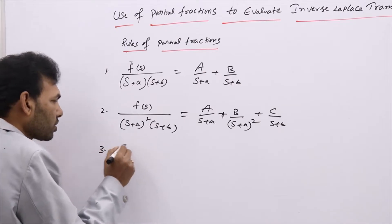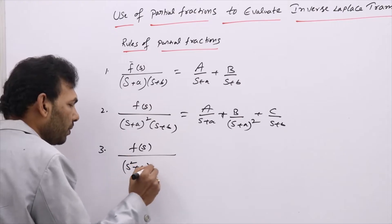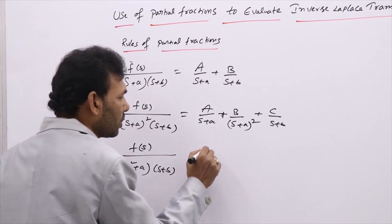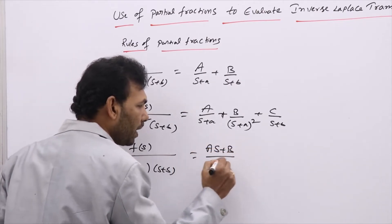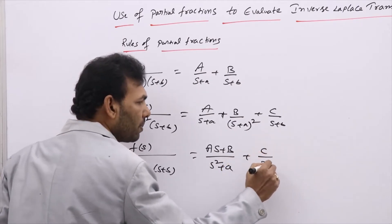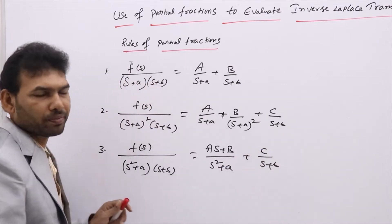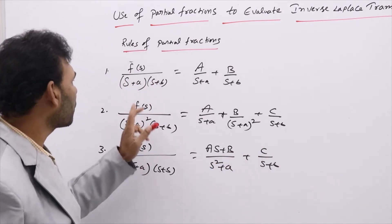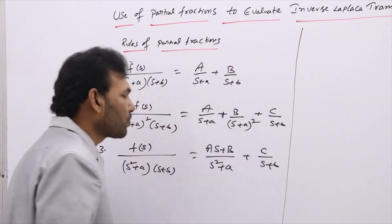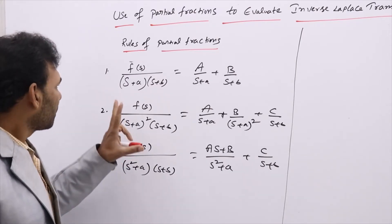If you have an internal quadratic in the denominator, like (s²+a)(s+b), you need to split it as (As+B)/(s²+a) plus C/(s+b). If you have s² in the second factor as well, you need to write Cs+D in that numerator instead of just C. These are the partial fraction rules we learned in intermediate or diploma.